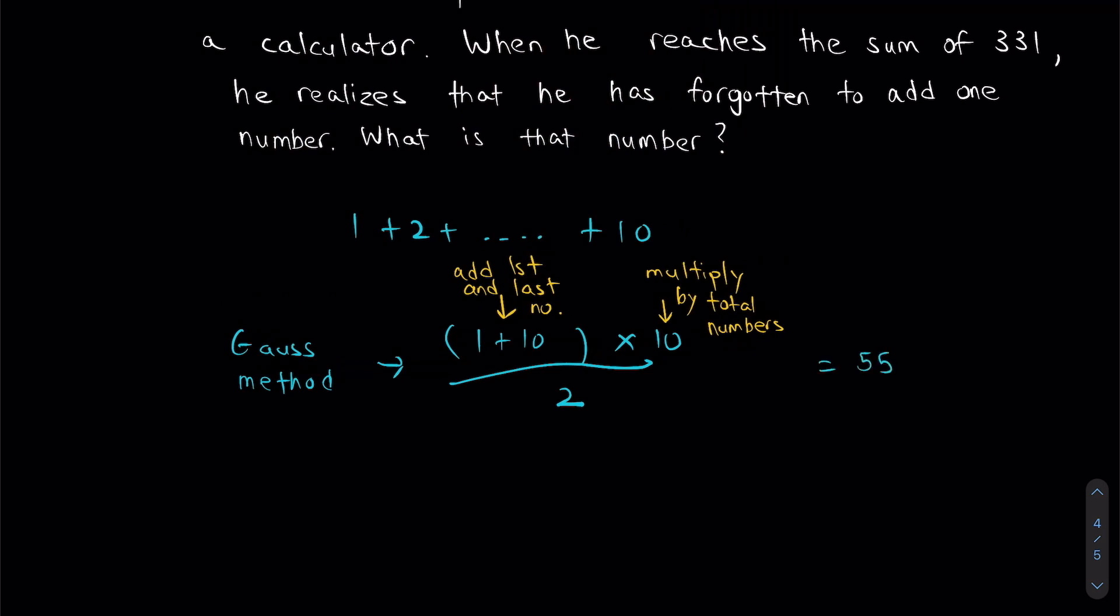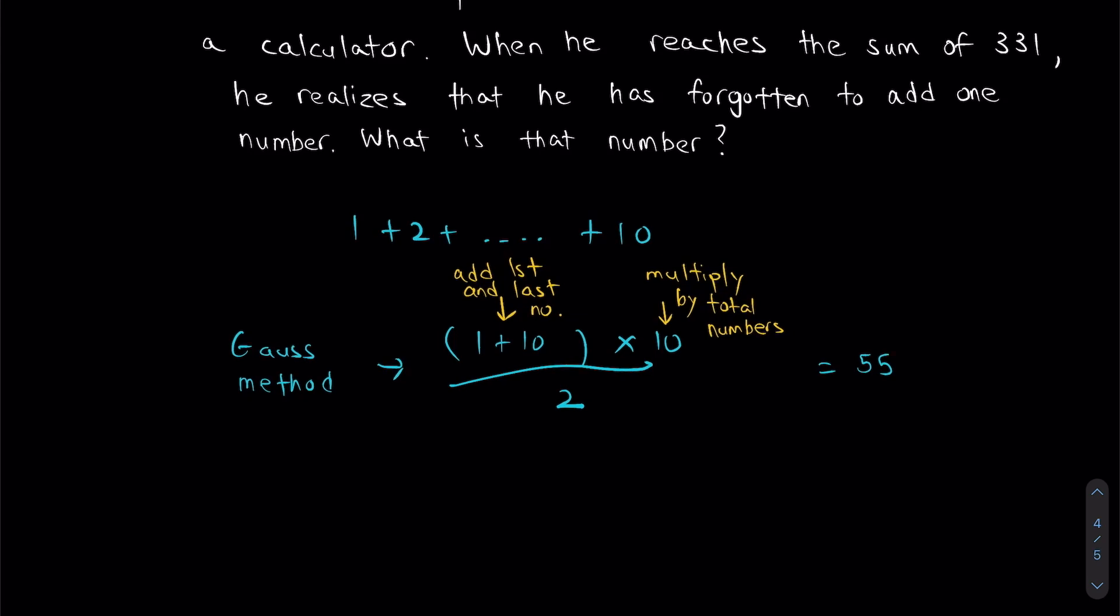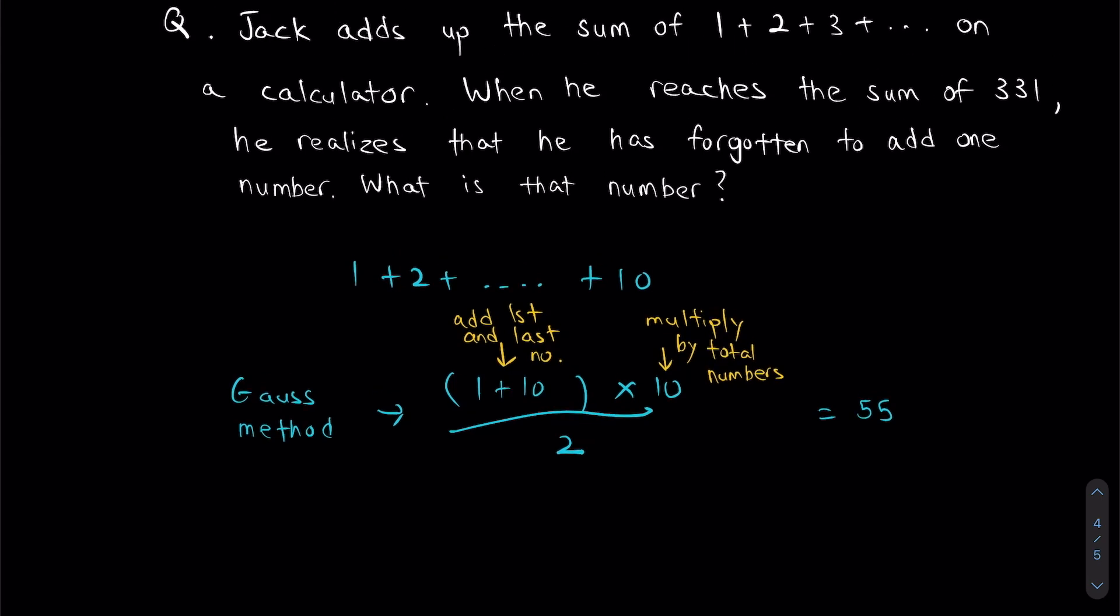So what is Jack essentially doing? He's basically doing a Gauss sum on his calculator as well. And if you remember what I mentioned earlier, the answer which he got on his calculator, 331, is smaller than the actual answer he should be getting because he forgot one number. So how do we do this question?